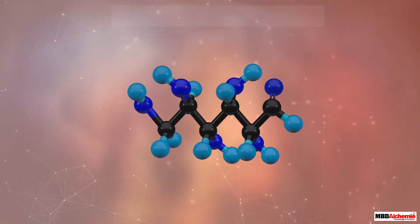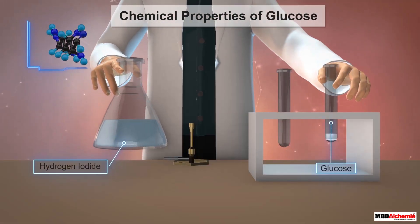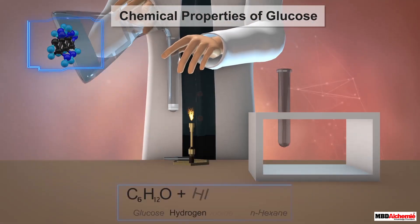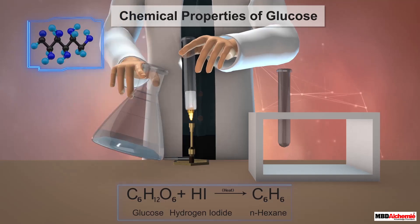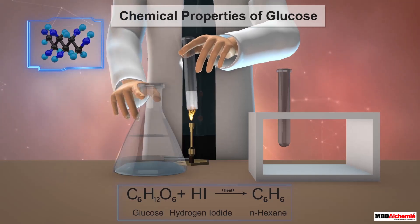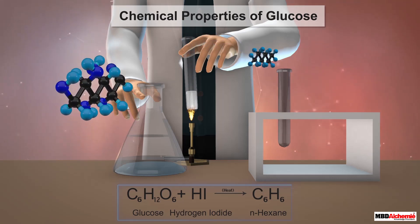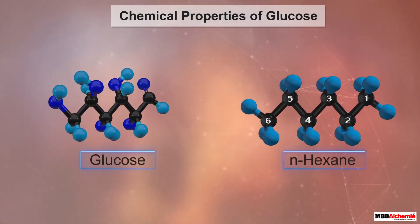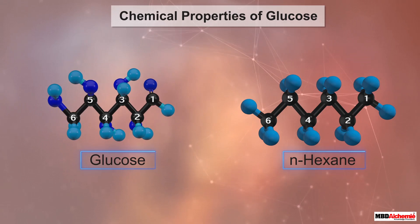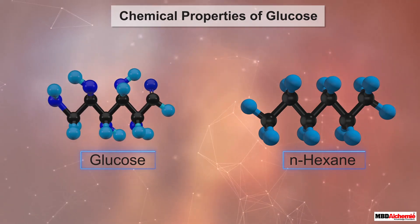This structure of glucose is evident by many of its properties. For example, when heated with hydrogen iodide, glucose forms n-hexane. An n-hexane molecule has a straight chain of six carbon atoms, and this indicates the presence of the same in a glucose molecule.